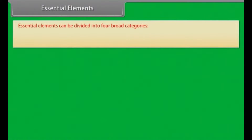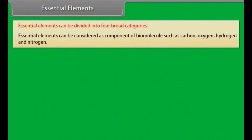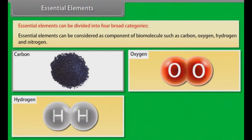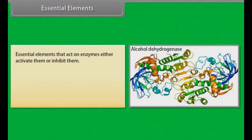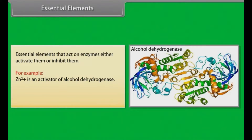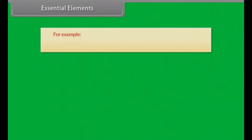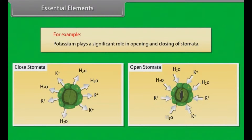Essential elements can be divided into four broad categories: they can be components of biomolecules such as carbon, oxygen, hydrogen, and nitrogen; they can be energy-related chemical compounds, for example magnesium in chlorophyll; they can act on enzymes to activate or inhibit them, for example Zn²⁺ is an activator of alcohol dehydrogenase; and some change the osmotic potential of a cell, for example potassium plays a significant role in opening and closing of stomata.